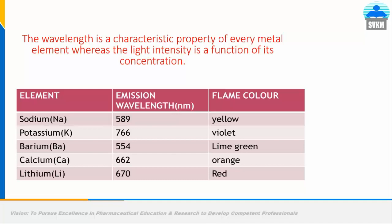The wavelength is a characteristic property of every metal element, whereas the light intensity is a function of its concentration. This broad and self-explanatory statement illustrates both the qualitative and quantitative characteristics of flame photometry.